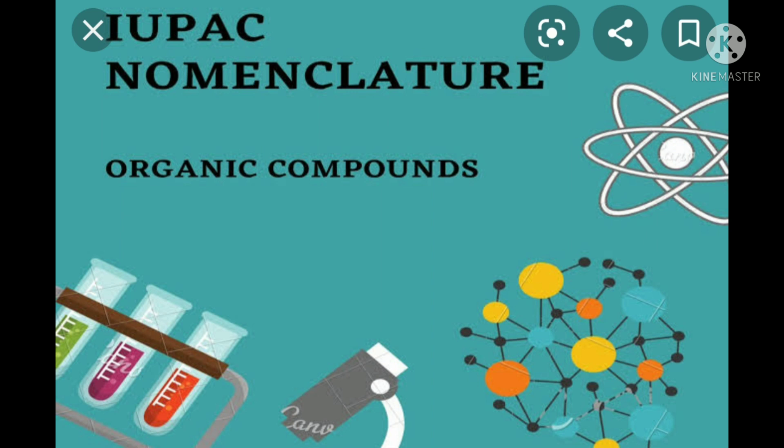IUPAC — International Union for Pure and Applied Chemistry — gives the naming system for organic compounds. IUPAC Nomenclature is a very important topic, and we are going to start with its basic principles.